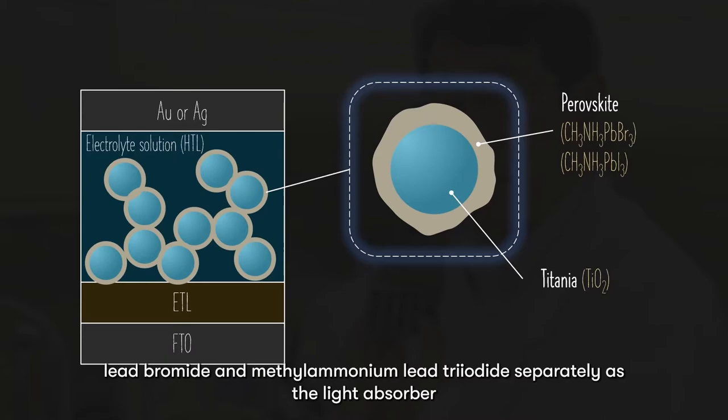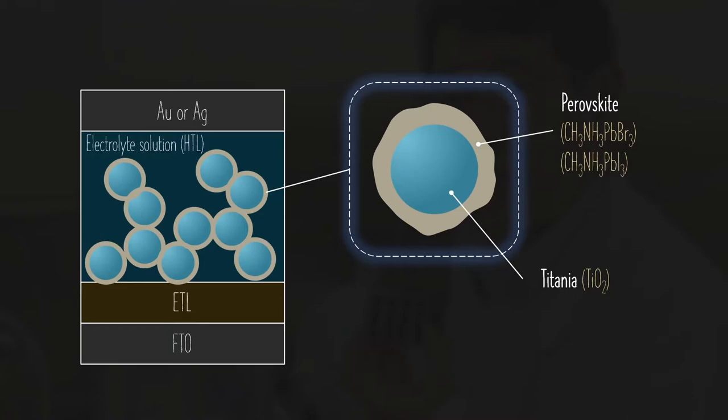They used methyl ammonium lead bromide and methyl ammonium lead triiodide separately as a light absorber, aka sensitizer, by coating them onto titania nanoparticles.